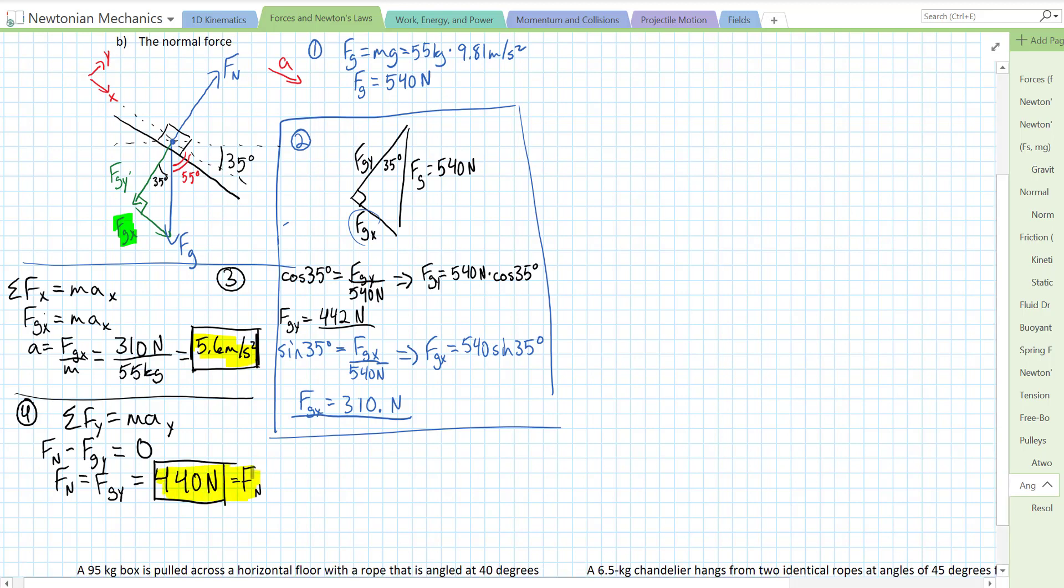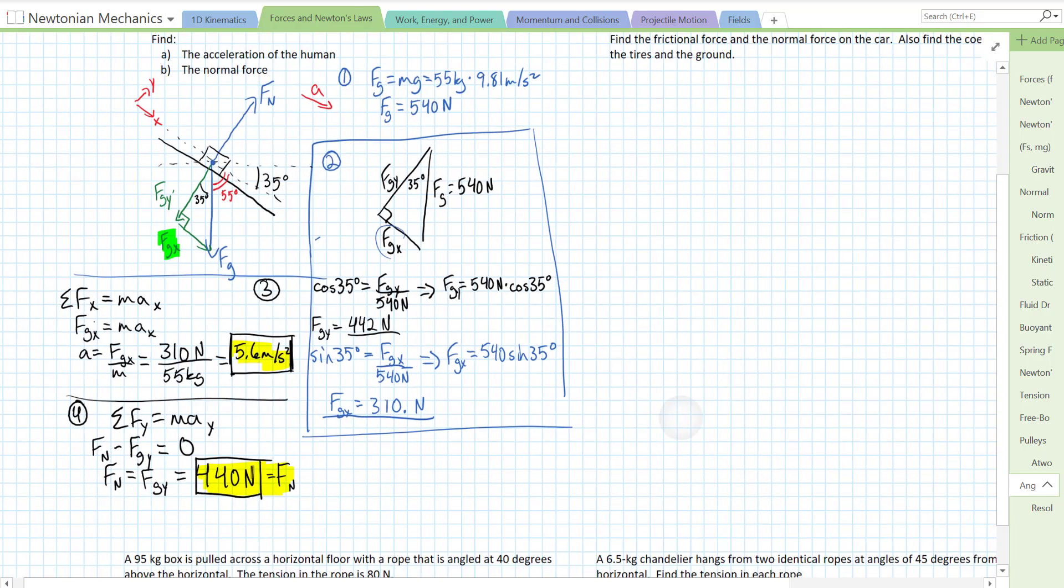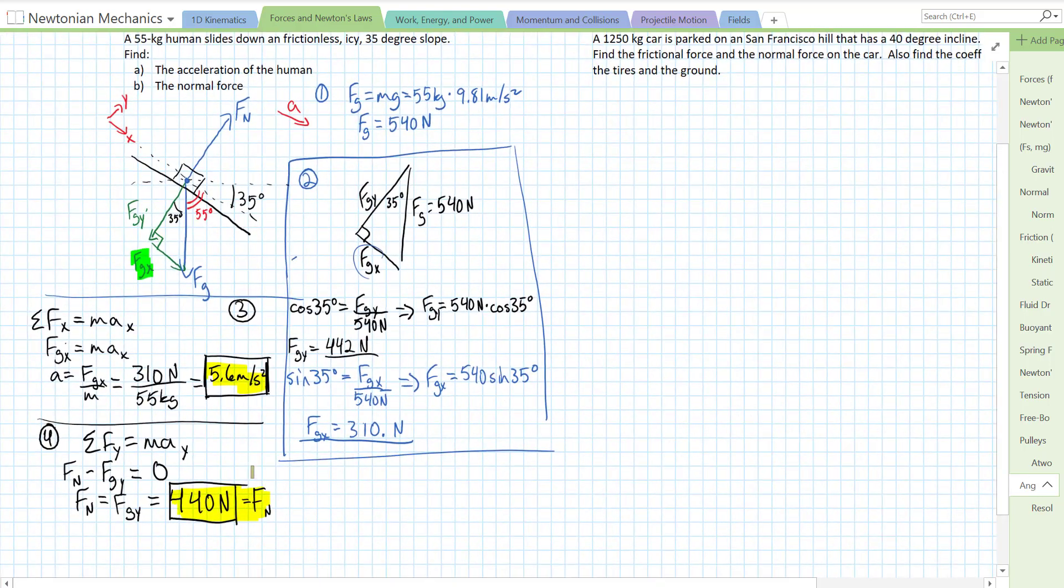So, that's that. That's an inclined plane problem with no friction. Break our vectors into components parallel and perpendicular to the slope. Then use Newton's second law to solve. Bye.